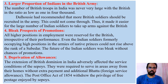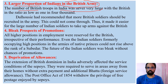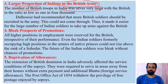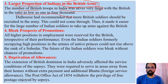The larger proportion of Indians in the British army was also a major reason why Indians could easily revolt against the British. The number of British troops in India was never very large. With a very small amount of army they were controlling the majority of India - this was possible only because the majority of soldiers were Indians who were loyal to the British. It was as low as one British soldier in four thousand.